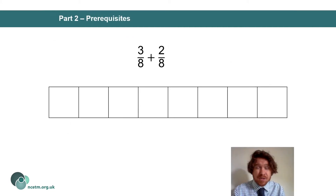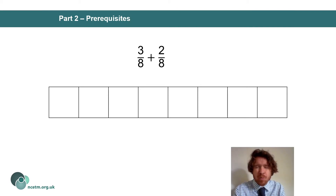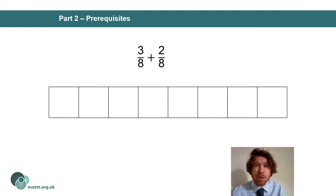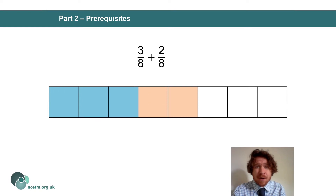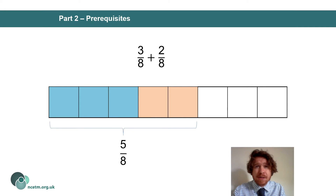To make sure that students can answer questions like this — with or without a representation — you might want to use a bar model, which would probably be my go-to, or you could use a number line or some blocks. We can highlight that if we're calculating three-eighths plus two-eighths, there are my three-eighths, and I'm adding another two-eighths — another two of the same unitary value — so altogether I have five-eighths.